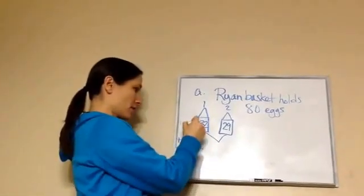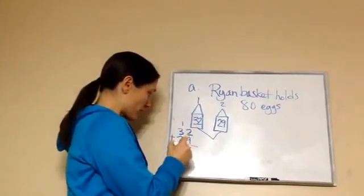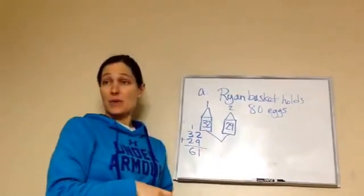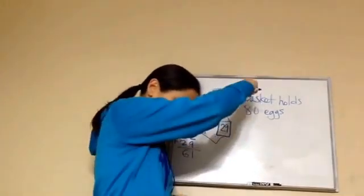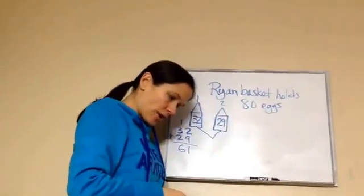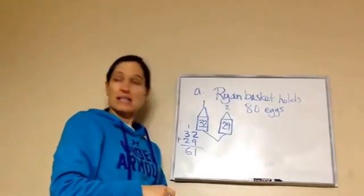9 plus 2 is 11. 3 plus 2, 5, 6. He's got 61 eggs at this moment. And the question, well, it tells me that the basket can hold 80. So, how many more eggs can Ryan's basket hold?